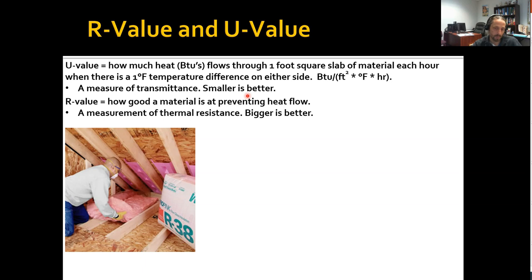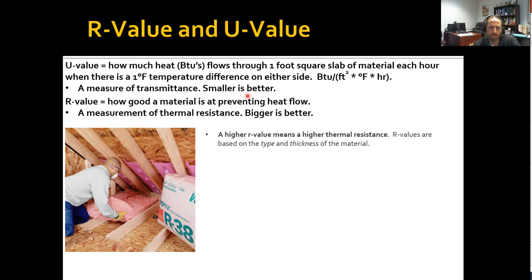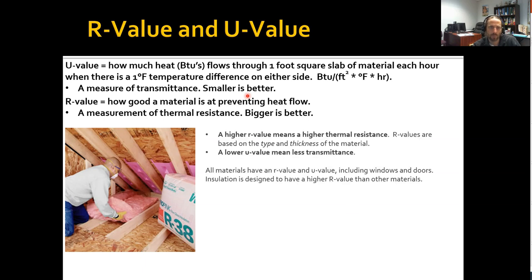R-values you can think of as a measure of resistance. It's very intuitive — more R is better. More R means more heat flow resistance, which means better insulating value. Bigger R is better; lower U is better. Remember, R and U-value are characteristics of all materials, so you can actually find an R and U-value for anything. We'll use it for all kinds of surfaces — insulation, windows, wall components, and so forth.